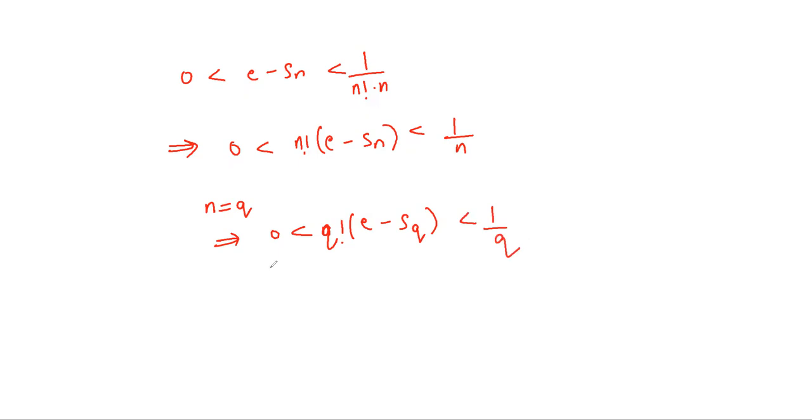Now by our assumption q factorial times E is an integer, since we have assumed E equals p over q.